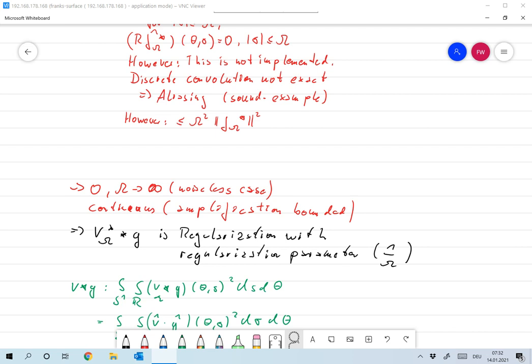So we have that v_omega convolution with g is a regularization, and the regularization parameter could be omega, but we standardize the regularization parameter to go to zero, not to infinity.